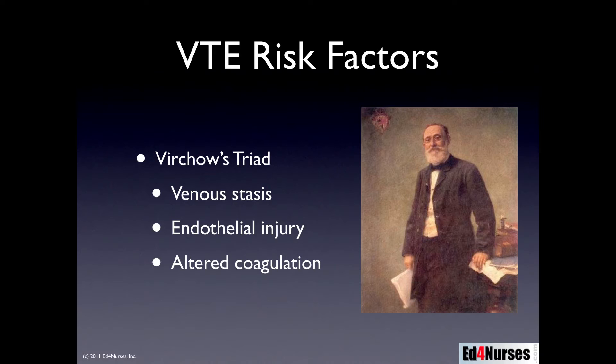Venous stasis is the first element of Virchow's triad. 150 years ago, venous stasis meant your patient was laying in bed for like two weeks — that doesn't happen anymore. Our patients are up and ambulating. So venous stasis could now be as short a period as about eight hours, which kind of redefines the whole idea. Your patient admitted last night could be at risk for developing a clot this morning.